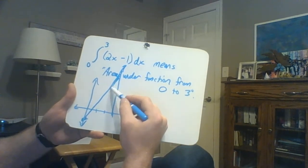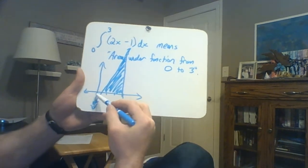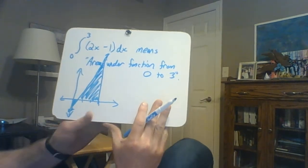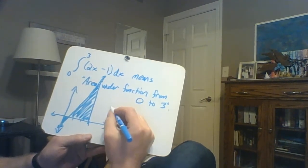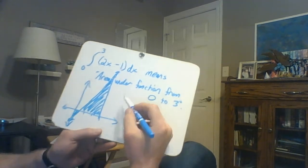So they want us to find this area here combined with this area down here. Now this brings up another interesting point that you need to understand. Notice some of this area is below the x-axis. That matters.